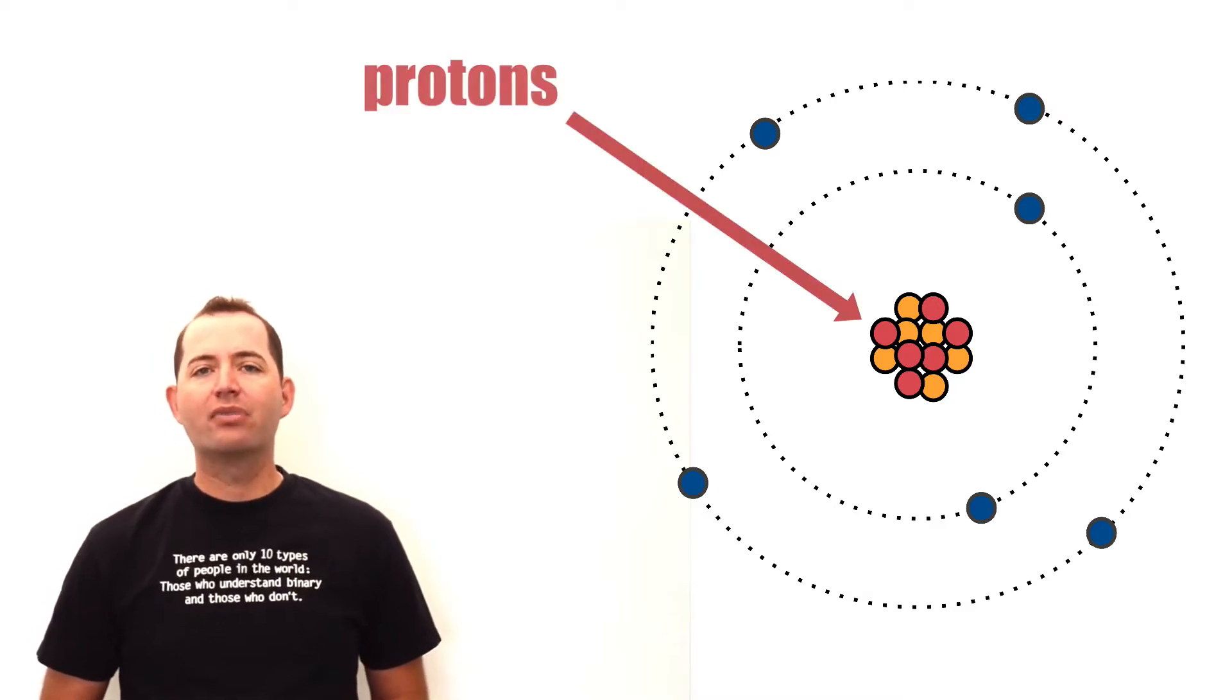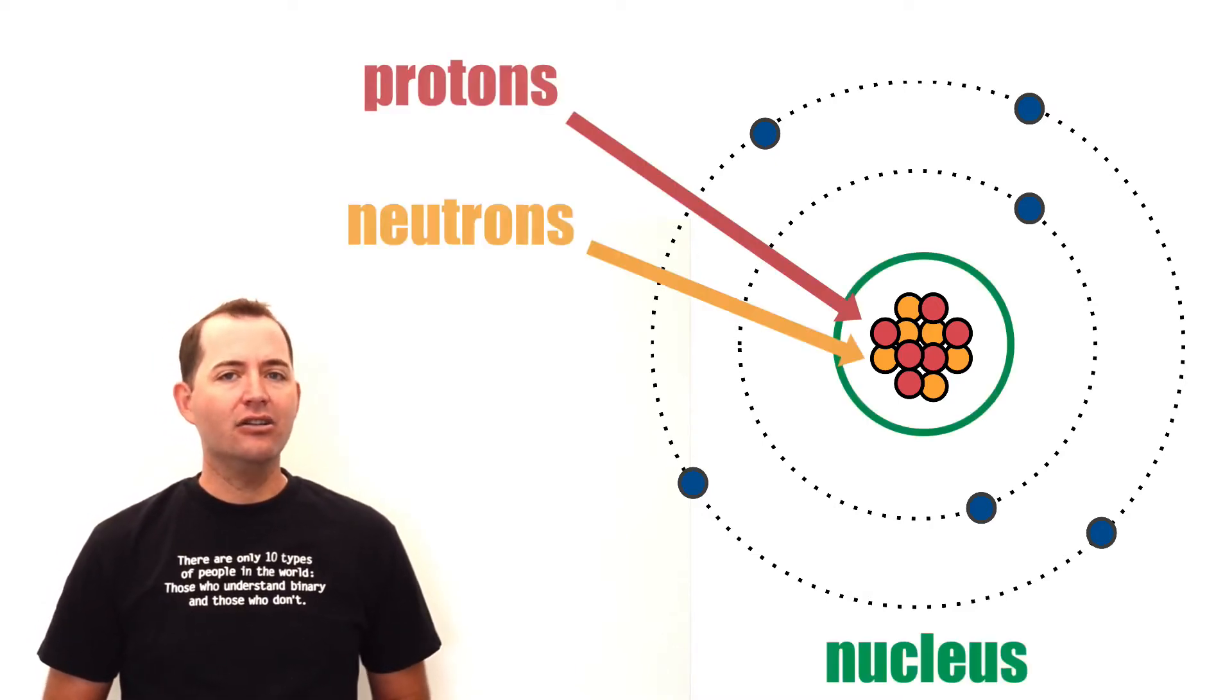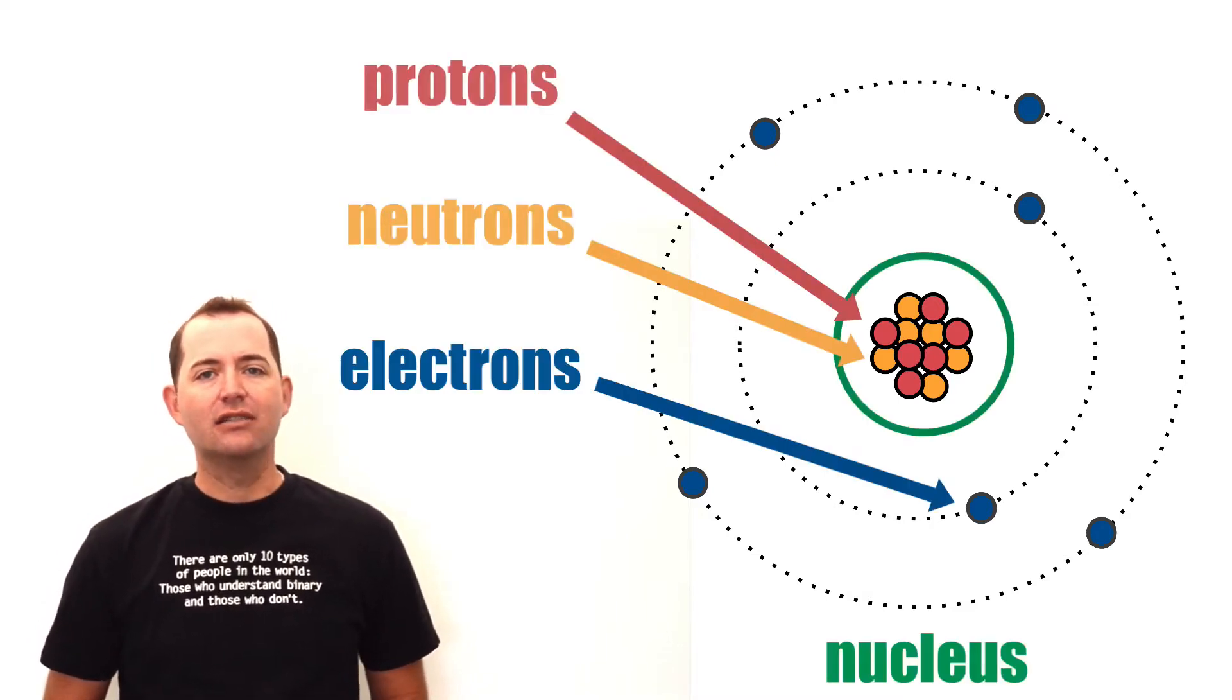All atoms are made up of protons and neutrons in the nucleus and electrons in what are called electron clouds or electron shells.